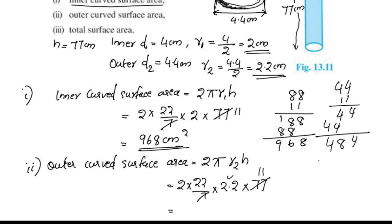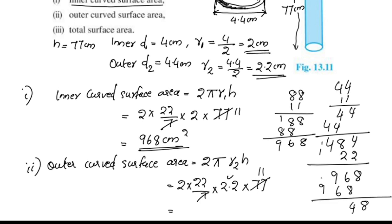Now multiplying 484 by 2.2 — we have a decimal point. 484 multiplied by 2.2 equals 1064.8. So the outer curved surface area is 1064.8 cm².